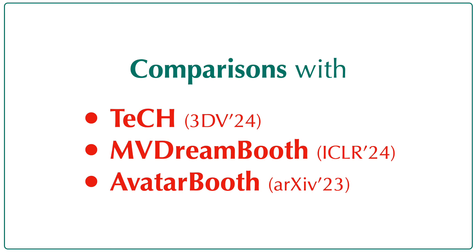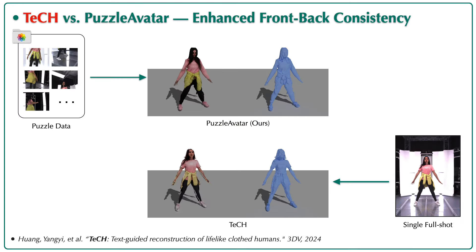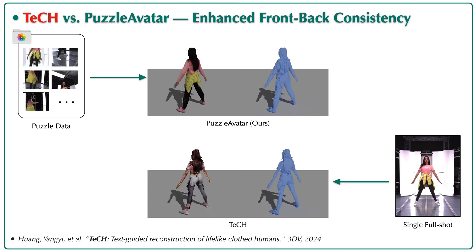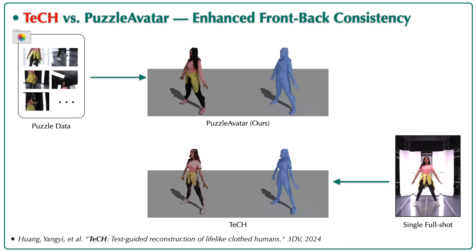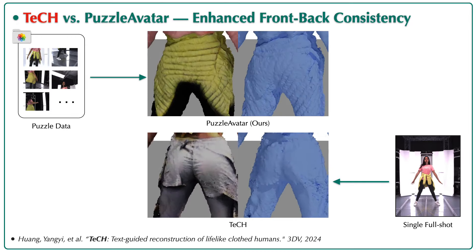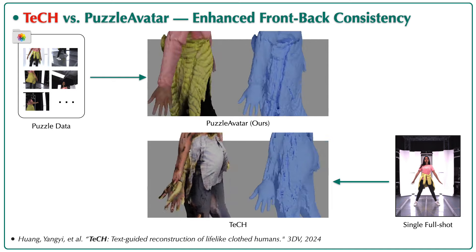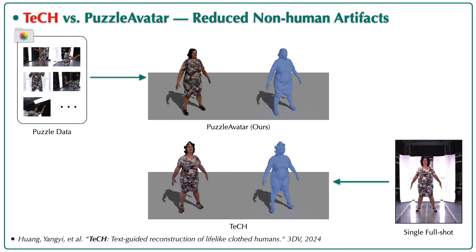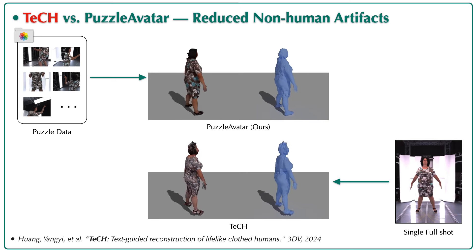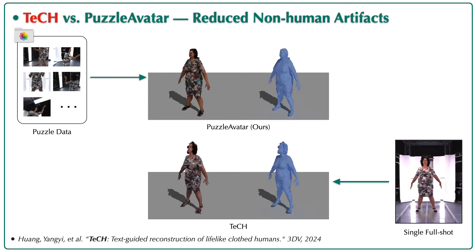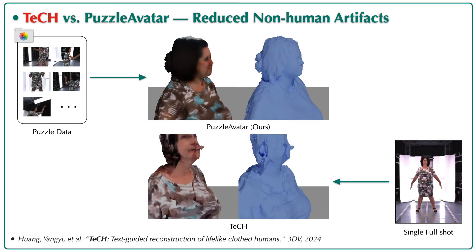Now let's compare Puzzle Avatar with other baselines, including Tech, MV DreamBooth, and Avatar Booth. Compared with Tech, Puzzle Avatar achieves better front-back consistency by treating all views equally, whereas Tech processes the front and back differently — it reconstructs the front but imagines the back. As Puzzle Avatar is not dependent on pixel-aligned losses and accurate estimators, it does not show non-human artifacts that Tech has.